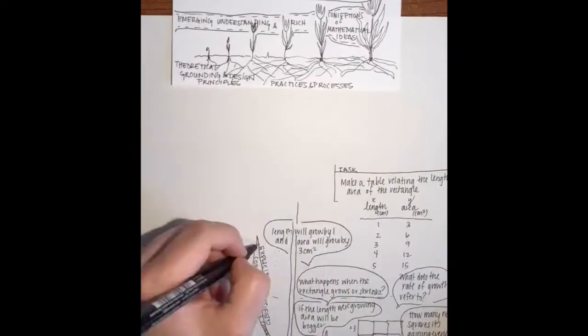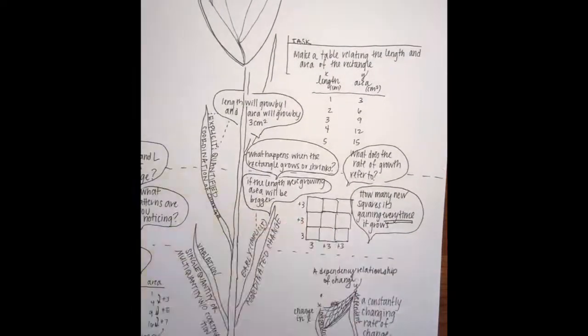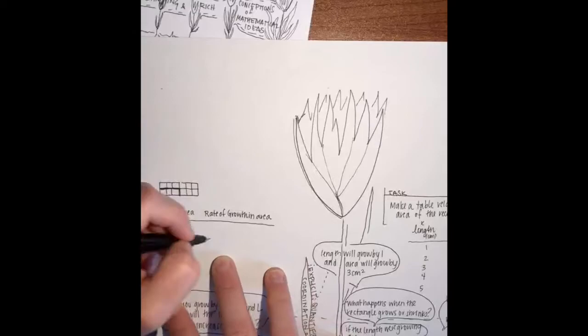Then along the stem, as the flower grows, you have these emerging understandings or clusters of conceptions.